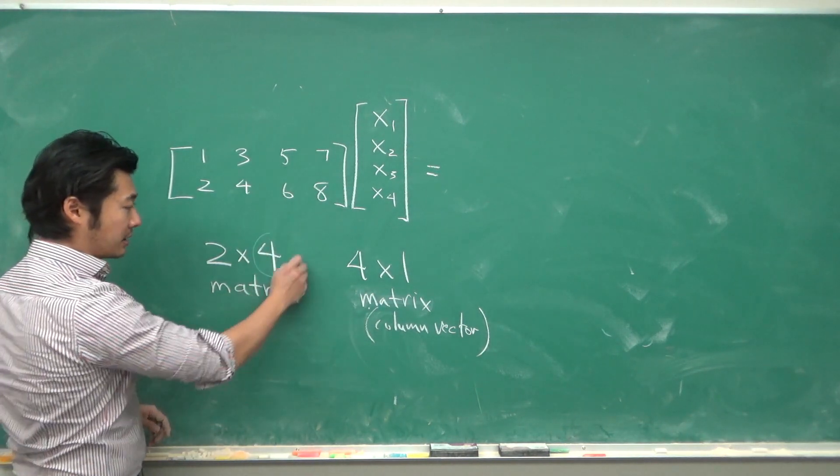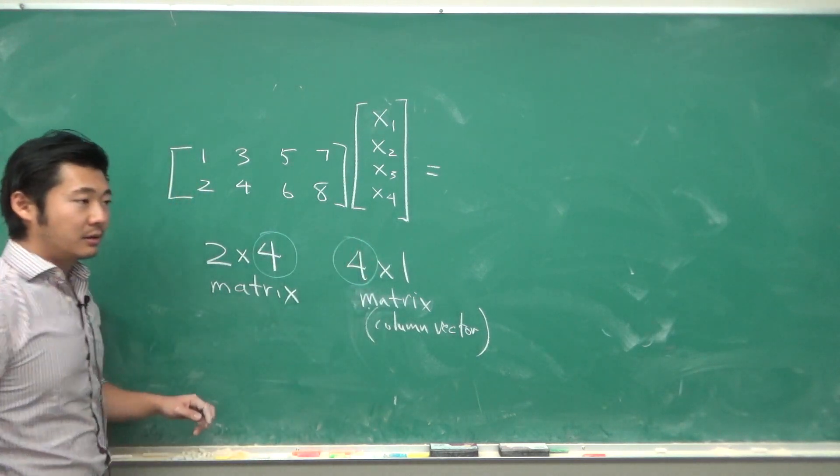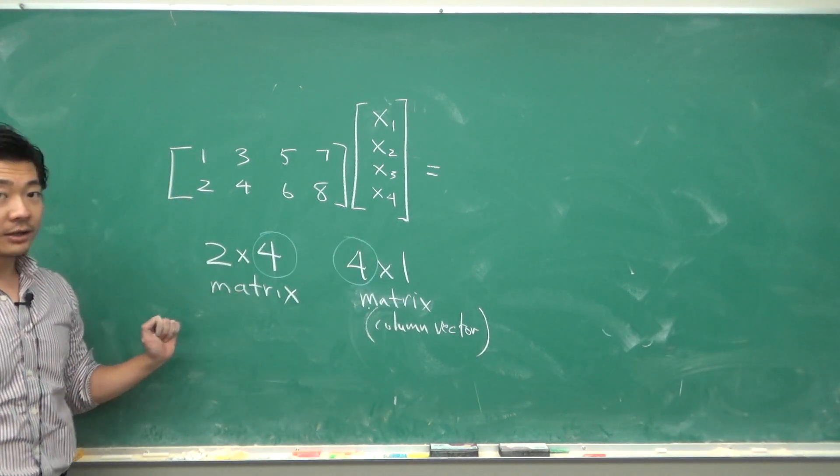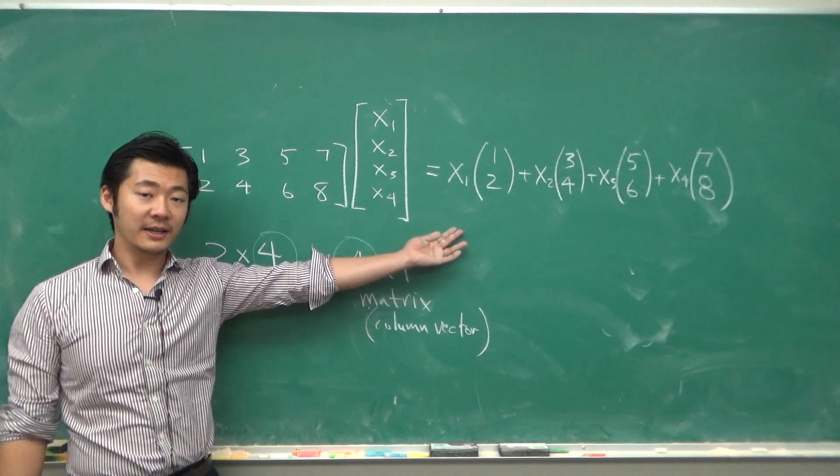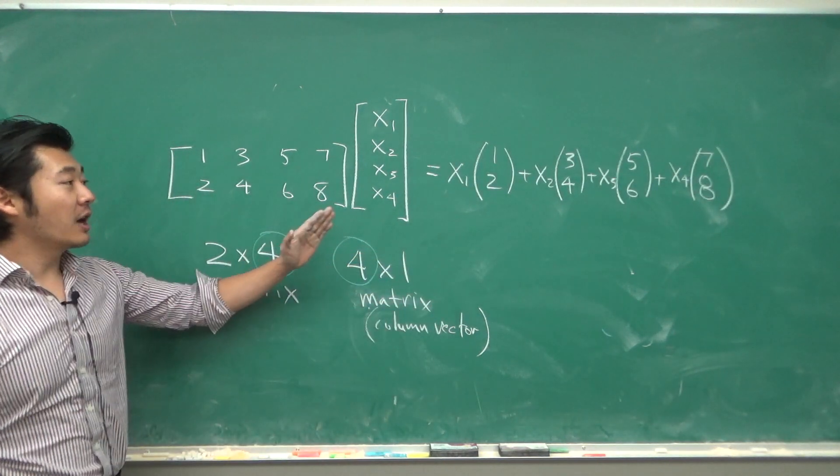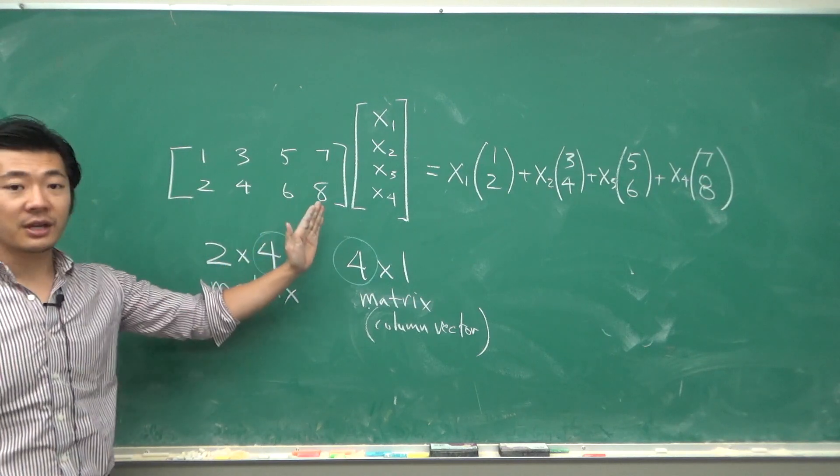As long as this number and this number matches up, then we can consider their product, which is a linear combination of the columns of the matrix.